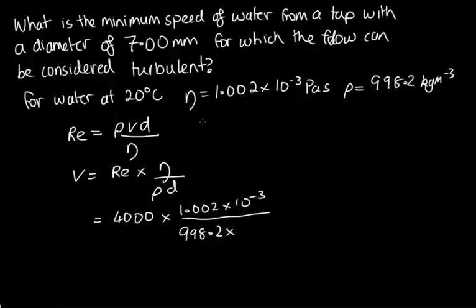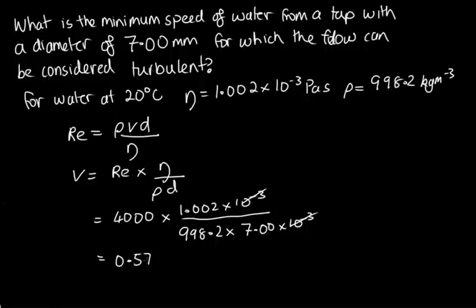So that 10 to the minus 3 and that 10 to the minus 3 cancel each other out, and when we type all this into the calculator, we get 0.574 metres per second. So it's when the water hits this velocity that the flow will be completely turbulent when it's coming out of the tap.